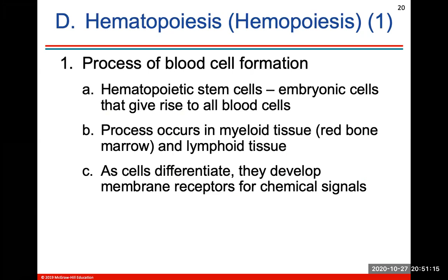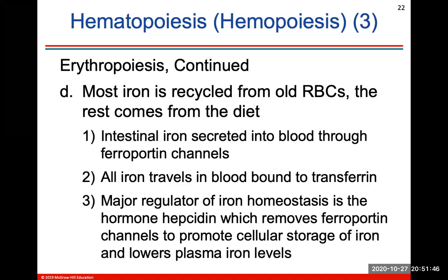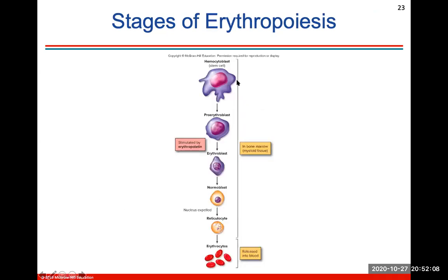Hematopoiesis is the process of blood cell formation coming from hematopoietic stem cells, which are embryonic cells that give rise to all blood cells. From there, cells differentiate to form different types. Erythropoiesis is the formation of red blood cells, occurring in the red bone marrow, regulated by the hormone erythropoietin released from the kidneys when low oxygen levels are present. Most iron is recycled from old red blood cells; the rest comes from the diet. Iron is transferred through the blood bound to transferrin, and a major regulator of iron homeostasis is the hormone hepcidin.